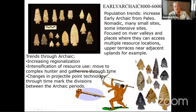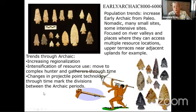Trends include increasing regionalization — people aren't necessarily crossing the United States anymore. They're moving to complex gathering centers and starting to manage the landscape, like burning woods to grow more berries on the edges. Changes in projectile point technology mark the time differences. All of these are examples of Early Archaic spear points — the variety is vastly increased.